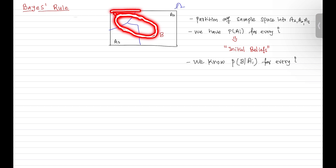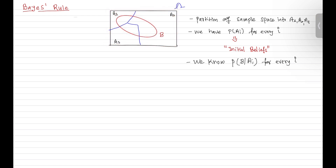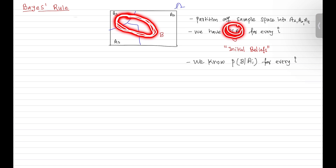Initially your total domain was the entire sample space. But once I say that event B has occurred, now this event B is your universe — you have to think within this universe. Once event B has occurred, you should not have the same belief as at the start. You need to revise the probability of each scenario. Once you have the information or the evidence, it is good to revise our initial beliefs.